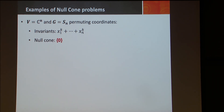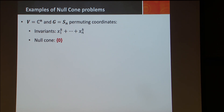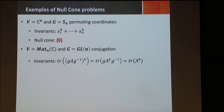Audience question: Is it because it's a discrete group? Yes. Because it's a discrete group there are no limits — no limit points — so the null cone is just the zero vector. You could also see this through the invariants.